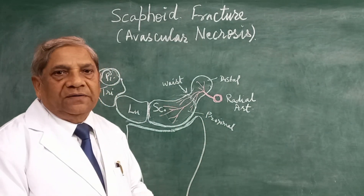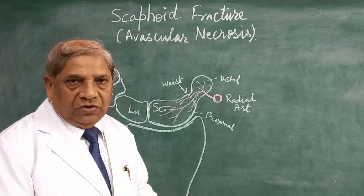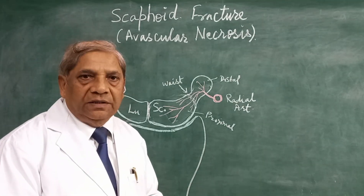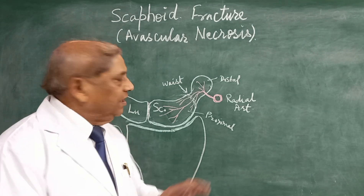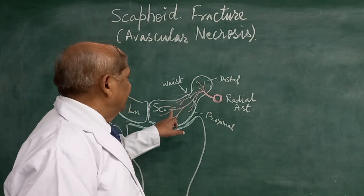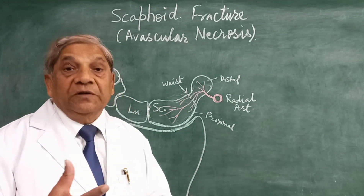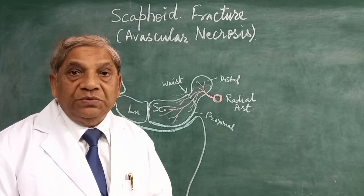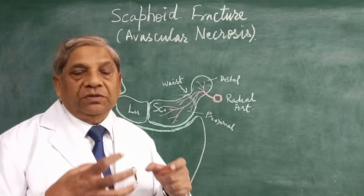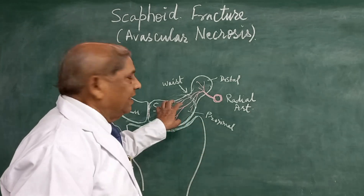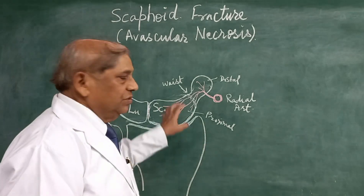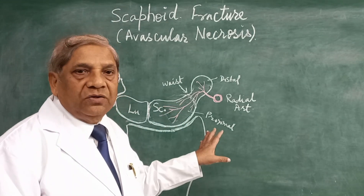If you take an X-ray soon after the fall — within a day or two — and if there is a complete fracture, it may not be difficult to see the fracture. But after two weeks, when you take an X-ray, it will be very well seen because the proximal part of the scaphoid will appear as a degenerated or necrotic mass. There will be necrosis and absorption of the bone, making it easier to diagnose as the tissue starts to undergo necrosis.